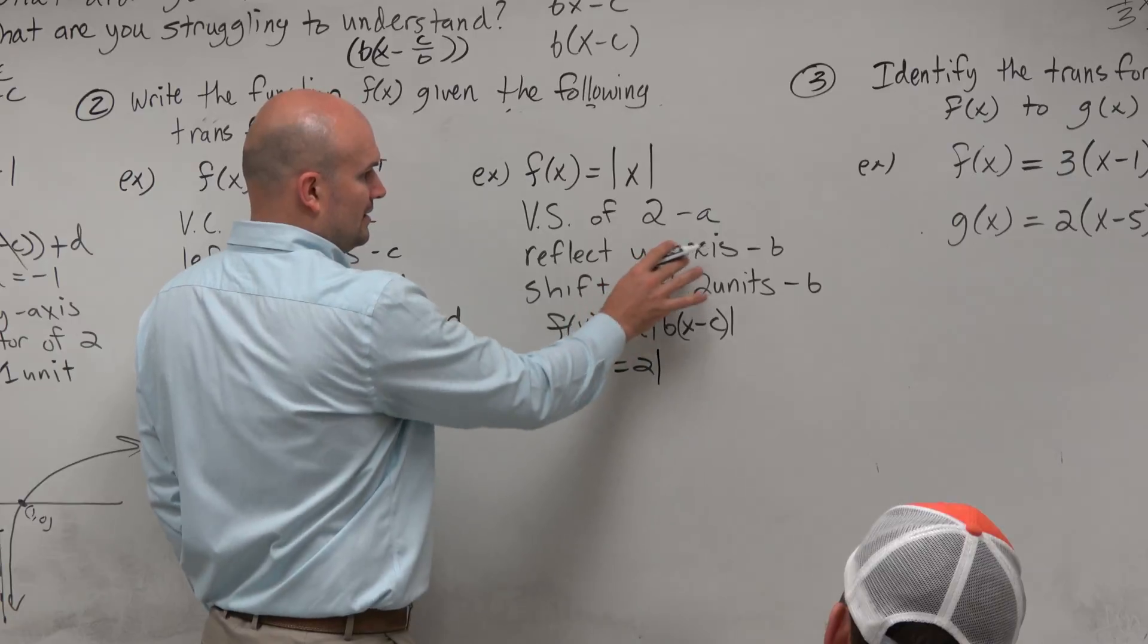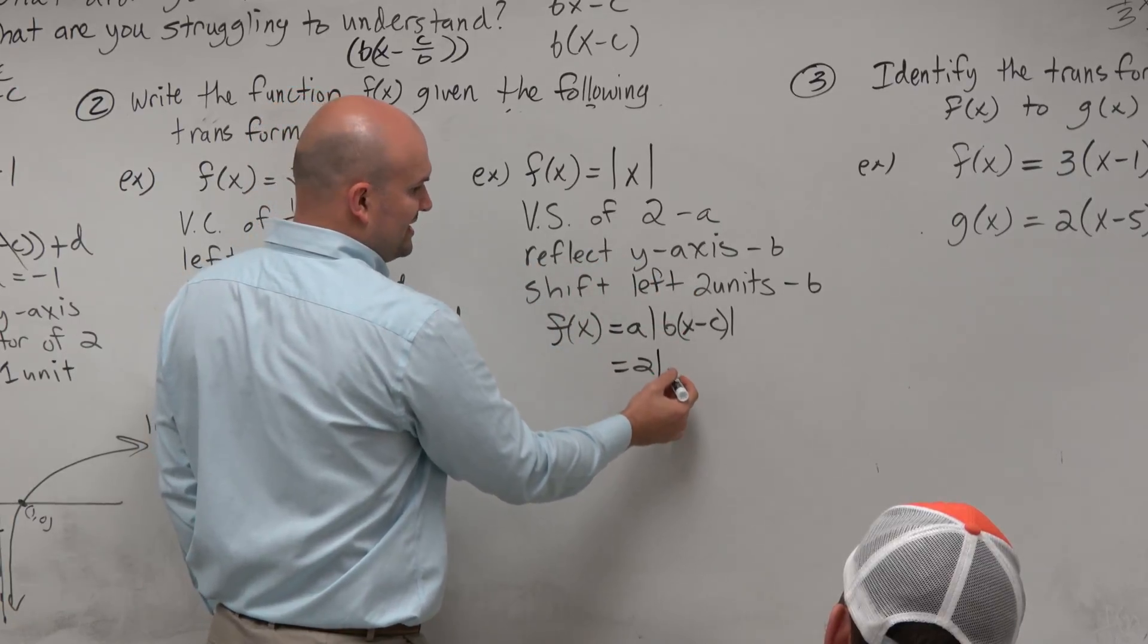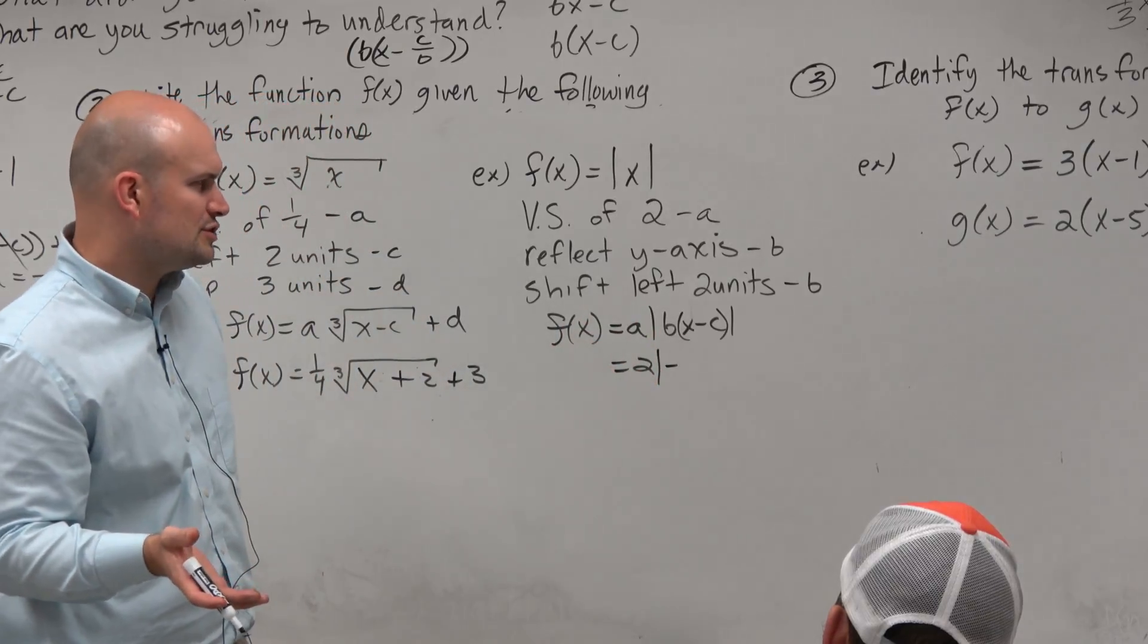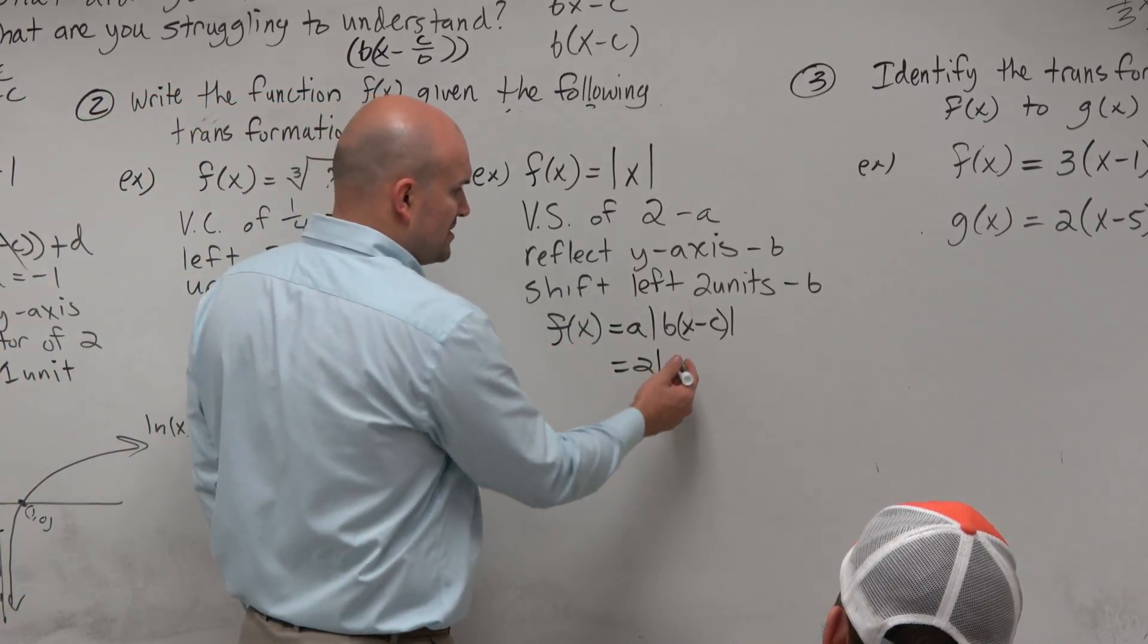So B is reflect y-axis. That means B has to be negative. And does it have a compression or a stretch? No, so it's just like a negative one. So we'll just write negative.